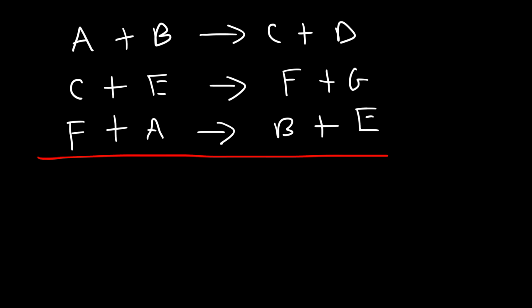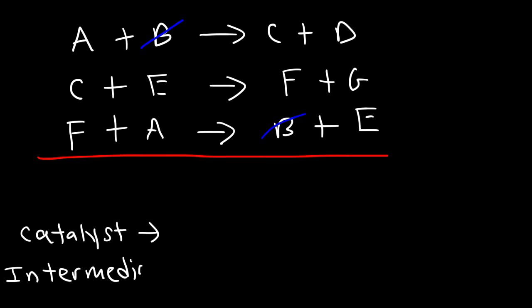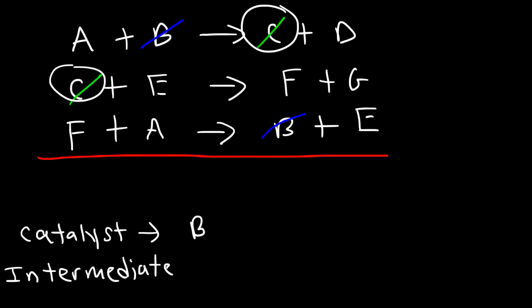Let's find out what cancels. Notice that B cancels — B shows up on the left side first, and then later it shows up on the right side. So it's consumed first and then it's produced later, which makes it a catalyst. Notice that C cancels as well. C appears on the right side first and then shows up on the left side later, so it's produced first and then consumed later, which means C is an intermediate.